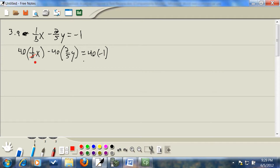Eight and forty are both divisible by eight. Eight divided by eight is one. Forty divided by eight is five. Five and forty both divisible by five. Five divided by five is one. Forty divided by five is eight. If you end up with ones as your denominators, that means you picked the right LCM, or at least a common multiple. Five times one gives us 5x minus eight times two is 16y. And forty times negative one is negative forty.